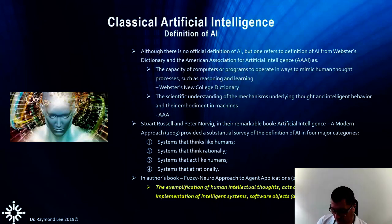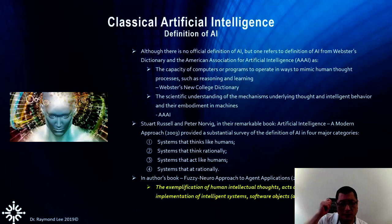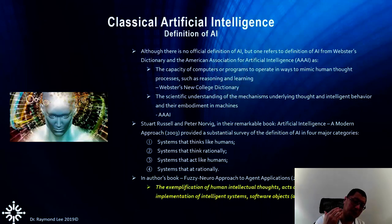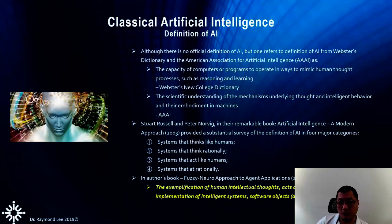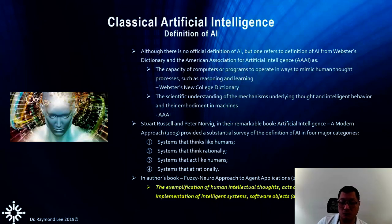Another definition is: the scientific understanding of the mechanisms underlying thought and intelligent behavior, and the embodiment in machines. This definition is one step forward — it not only talks about the way of thinking and reasoning but also talks about the relationship between body and mind, meaning how machines think and reason and how that is embedded in a physical machine. So you could say we're talking about robots — not only because computer systems themselves are machines, but robotic systems are machines that mimic the human body.